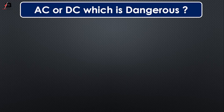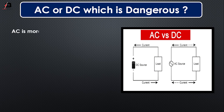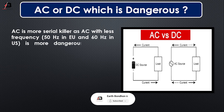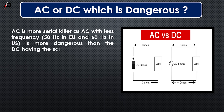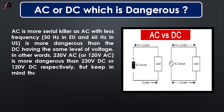So viewers, let's start. AC or DC — which is more dangerous? AC is more of a serial killer, as AC with low frequency — 50Hz in the EU and 60Hz in the US — is more dangerous than DC having the same level of voltage. In other words, 230V AC or 120V AC is more dangerous than 230V DC or 120V DC respectively.